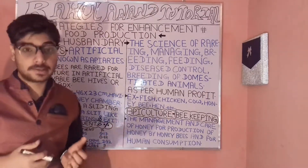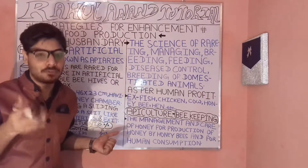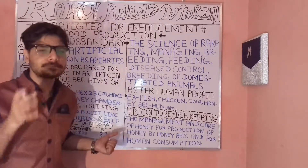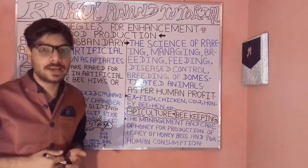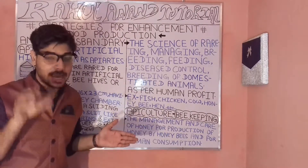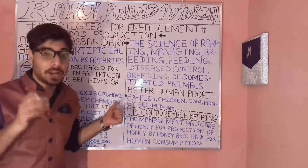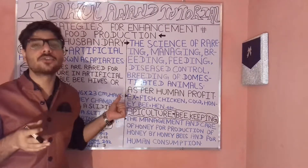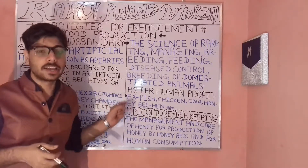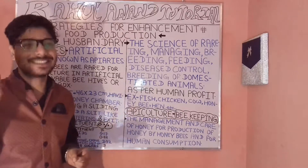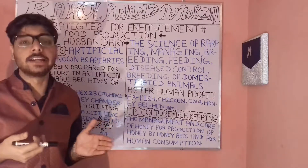When we talk about the apiary structure, it has a diameter or size of around 46 to 33 centimeters. It has a sliding top and a platform on which bees will lie, along with a particular outlet playing an important role for the entrance and exit of the bees. Apiaries are artificial movable boxes in which bees are kept.